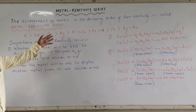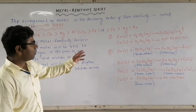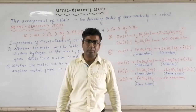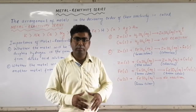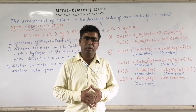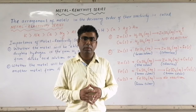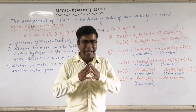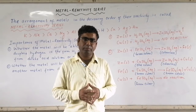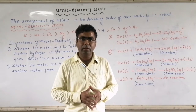Metals on the extreme left are highly reactive, while metals on the extreme right are the least reactive. The least reactive metals are copper, silver, and gold. Because they are least reactive, silver and gold are used for making jewelry. These metals do not undergo corrosion or reaction with atmospheric gases, so they remain in pure form and maintain their lustrous, shiny surface.